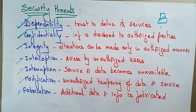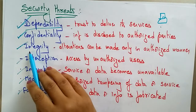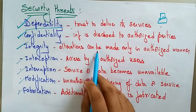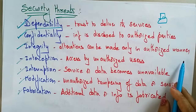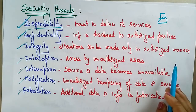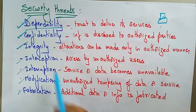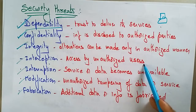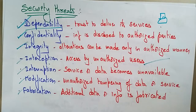Confidentiality means information is disclosed only to authorized parties. Integrity as a threat means alterations can be made only in an authorized manner — and you can't identify them. Interception is a security threat where the message is accessed by unauthorized users; if unauthorized users access your message, that is the interception security threat.